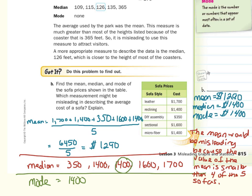I mean, if I'm that sofa store and I'm trying to get people in the store, I'm going to say, come in. Our average price is only 1290. It might get more people in than actually being a little bit more honest, where our average price is actually 1400.